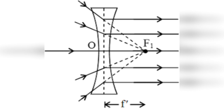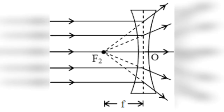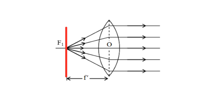For a convex lens, the second focal point is a point F2 on the principle axis such that rays of light incident parallel to the principle axis, after refraction from the lens, pass through it. For a concave lens, the second focal point is a point F2 on the principle axis such that rays of light incident parallel to the principle axis, after refraction from the lens, appear to be diverging from this point. In convex and concave lenses, the first and second focal points are on opposite sides.